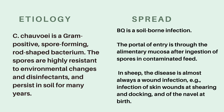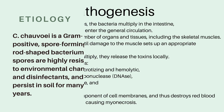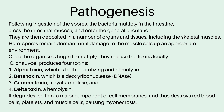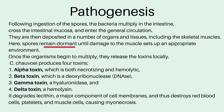As for the spread, blackwater is a soil-borne infection and the portal of entry is through the alimentary mucosa after ingestion of spores in contaminated feed. In sheep, the disease is almost always a wound infection. After ingestion of spores, the bacteria multiply in the intestine, cross the intestinal mucosa, and enter the general circulation, where they are deposited in organs and tissues including skeletal muscles. The spores remain dormant until damage to the muscle sets up an appropriate environment, upon which the organisms begin to multiply and release toxins locally.